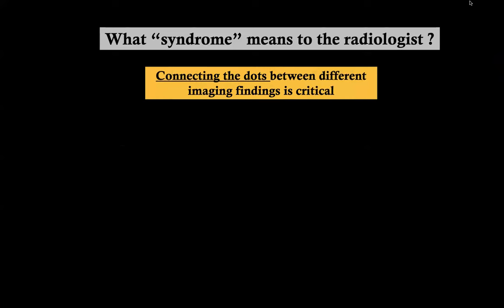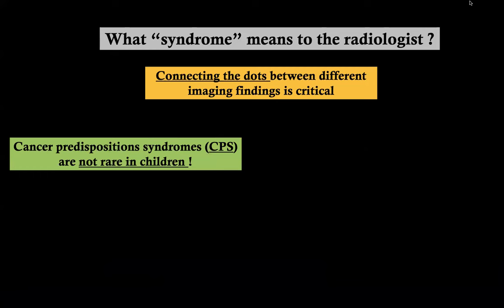What does syndrome mean to the radiologist? First, you need to connect the dots between different image findings, but also clinical findings. You need a family history and you need to be familiar with body abnormalities, not only neuro — and at least for me, this is very challenging. Second, remember that cancer predisposition syndromes are relatively frequent in children, so you need to keep this on the back of your mind when you see a tumor in a child.